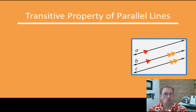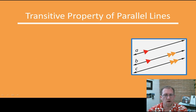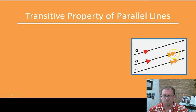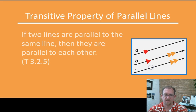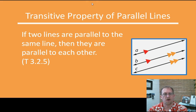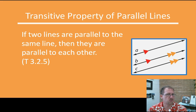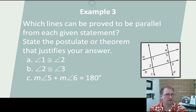One more idea: the transitive property of parallel lines. If A is parallel to B and B is parallel to C, then A is parallel to C. If two lines are parallel to the same line, then therefore they are parallel to each other. That's just the transitive property — that shouldn't be too challenging for you.